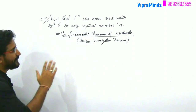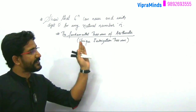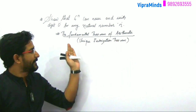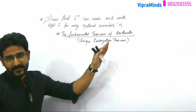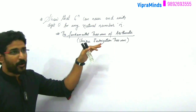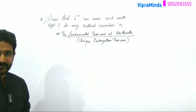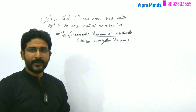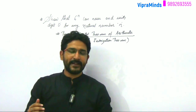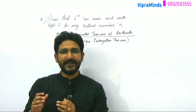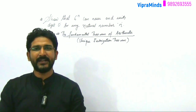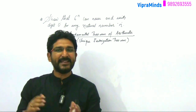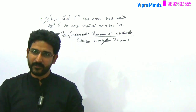First of all we are going to see what is the Fundamental Theorem of Arithmetic and the Unique Factorization Theorem — they mean the same thing. This theorem says that any number, whether it is a prime number or a composite number, can be expressed as a product of prime numbers.